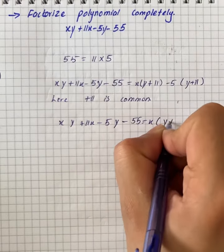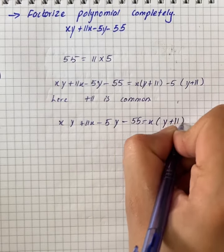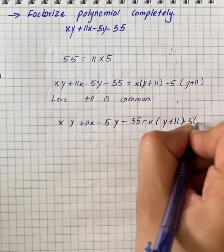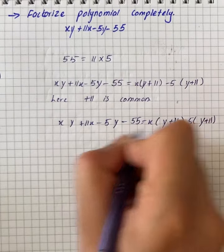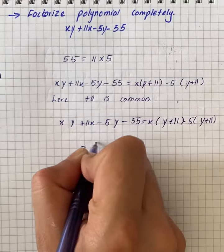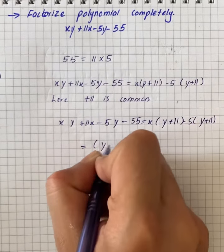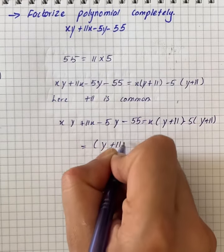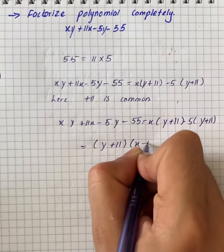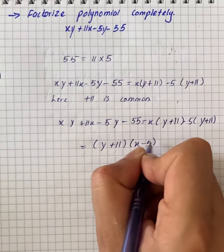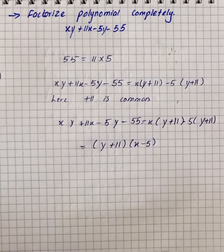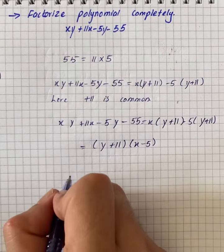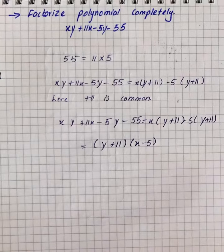So we have x into y plus 11 minus 5 into y plus 11, which gives us y plus 11 into x minus 5. So the factorization of the given polynomial is (y + 11)(x − 5).